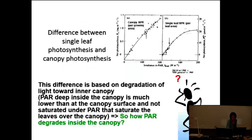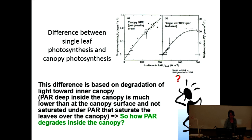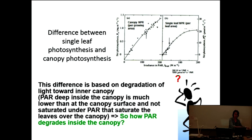In the canopy, some light still penetrates deep inside, and those lower leaves receive much lower light levels. Increasing the incident light doesn't increase top canopy leaf photosynthesis anymore because something else is limiting there. But below the canopy, light is still the limiting factor — therefore lower leaves can still drive more photosynthesis. As a whole, you see a linear increase. The vertical profile of PAR deep inside the canopy is much lower than at the canopy surface and does not saturate lower canopy leaves. This understanding is very important for DLI and the rest of the light lecture.